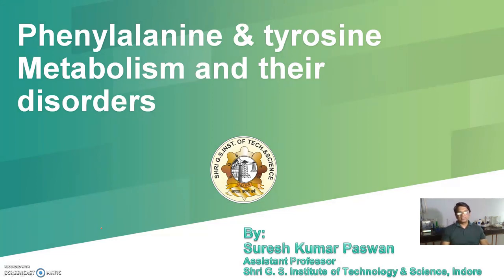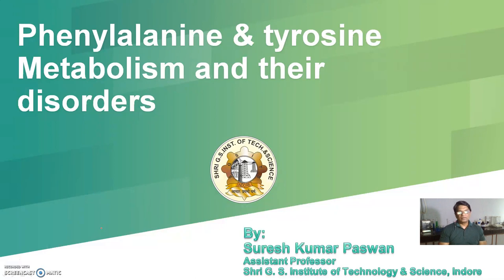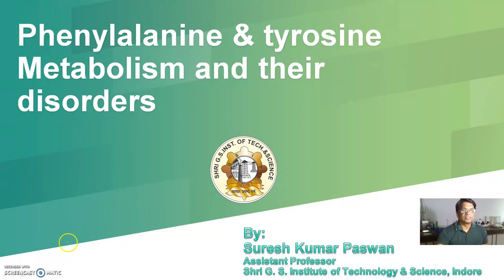This is a very important topic in biochemistry because these two compounds — phenylalanine and tyrosine — are the aromatic amino acids. They are responsible for many metabolic products such as dopamine, norepinephrine, epinephrine, melatonin, melanin, and serotonin. These compounds play a very significant role in the proper functioning of your body. Today we are going to discuss phenylalanine and tyrosine metabolism and their disorders.